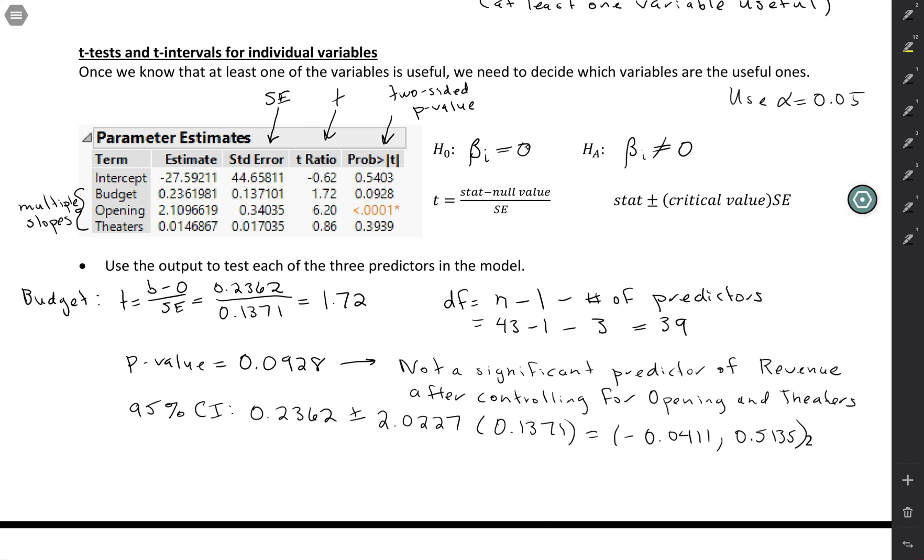So I'm not going to go through all the details for the other ones, but if we look at opening, that one definitely has a small p-value. So that means that for this one, it is a significant predictor. Again, we mean significant predictor after controlling for budget and theaters, the other variables in the model. So if we were to calculate the confidence interval for that one, the confidence interval would not include zero, because we know that it does have an impact. It's not reasonable to think that the slope is actually zero for this one.